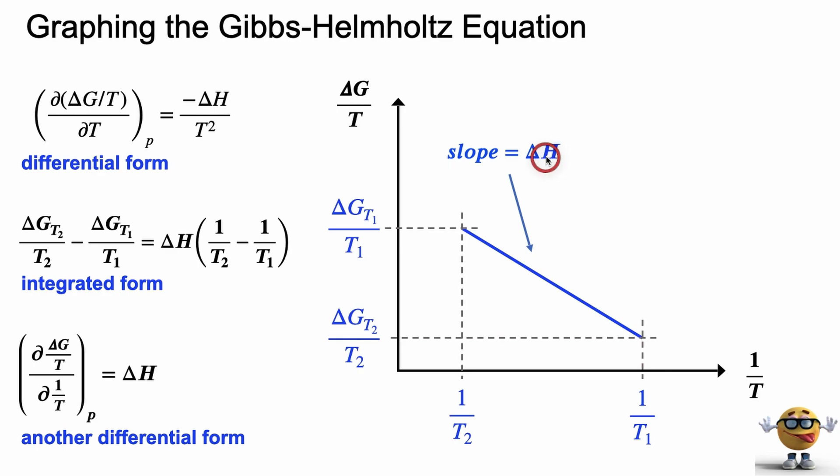And it's a straight line if delta H doesn't change. This one, this is like Y2 minus Y1 equals the slope times X2 minus X1. So anyways, we're going to do some graphing here to see how it looks.